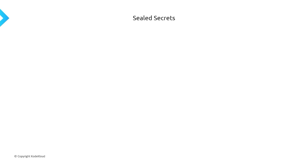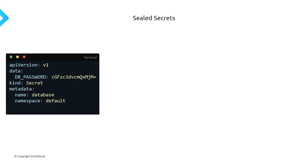In Kubernetes, we have two ways of creating a secret: the imperative way or the declarative way. Usually, especially if you're following a GitOps pattern, you want to use the declarative method. The problem is that in a secret manifest, you can see we've got the DB underscore password representing the database password. When you create the secret, the password is going to be base64 encoded. A lot of people make the mistake of thinking secrets are encrypted in Kubernetes — they're not. They're base64 encoded, which means it's not secure and anybody can decode it if they get access to your Kubernetes manifest.